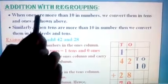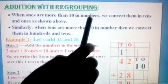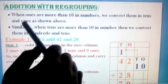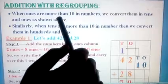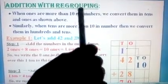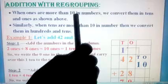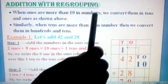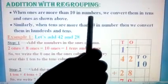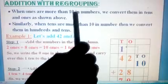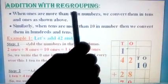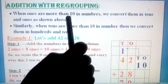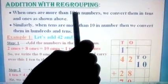When ones are more than 10 in numbers, we convert them in tens and ones as shown. What they have told here is when you have more than 10 in numbers. When you do without regrouping, you have only one number to be written in the answer. But here in ones place, you will get two numbers. That should be split and written as ones and tens. As you see the examples and learn, you will understand what it is.